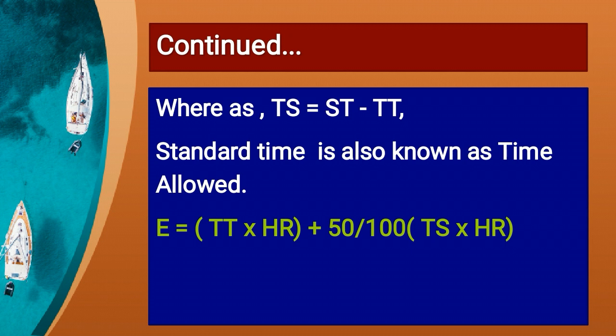Standard time minus time taken gives time saved, also called time allowed. So the Halsey Premium Plan formula is: Earnings = Time Taken × Hourly Rate + (50/100) × Time Saved × Hourly Rate. The bonus added is 50% of time saved multiplied by hourly rate.